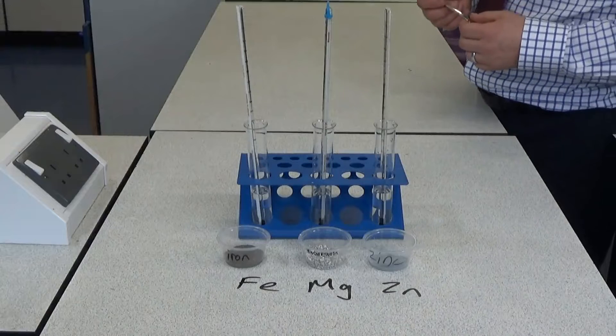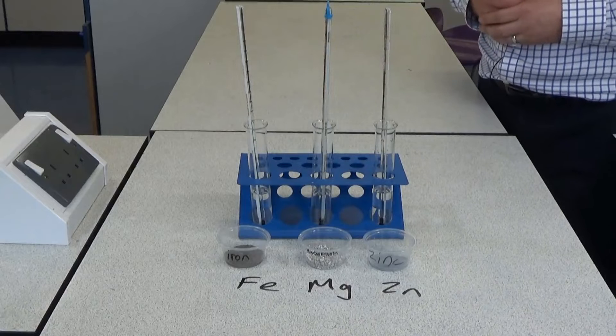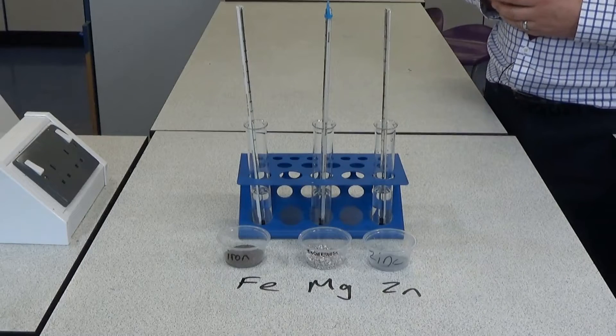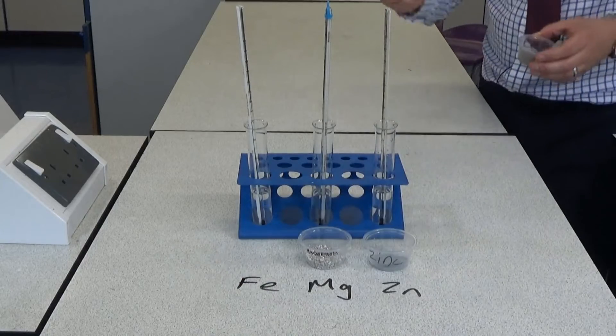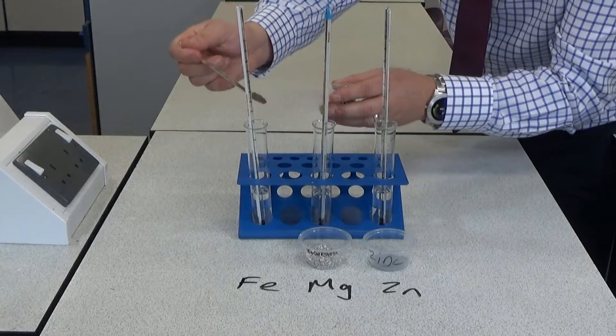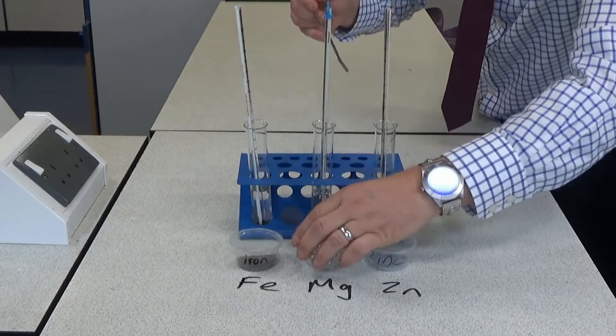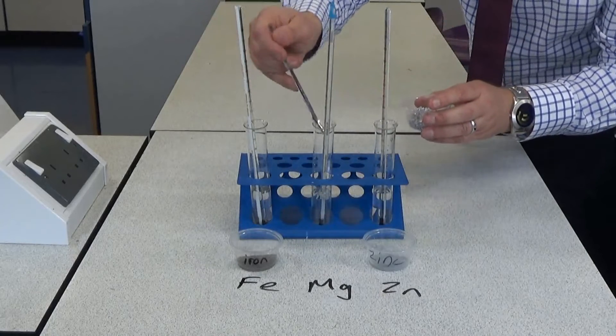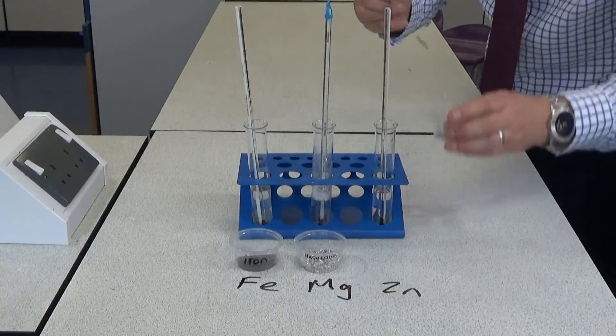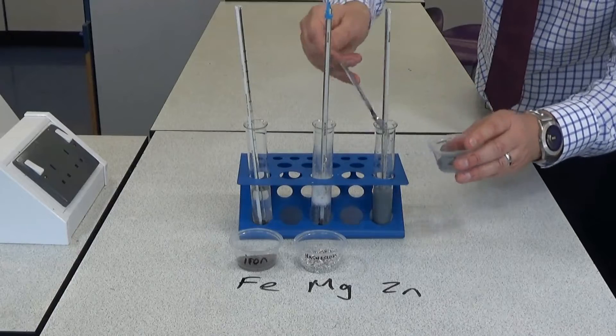I'm now going to see how different metals react with hydrochloric acid. In each of these test tubes I've got 20 centimeters cubed of hydrochloric acid so it's the same volume and it's also the same concentration because each one is one mole per dm cubed concentration. Now I'm going to add the metal to each of the test tubes. I've noticed that the starting temperature of each is 20 degrees C. So first of all I'm putting two spatulas of iron into the first test tube. To the middle one I'm going to add two spatulas of magnesium. And the third one I'm going to add two spatulas of zinc. So we can try and compare the reactivity of these three different metals.